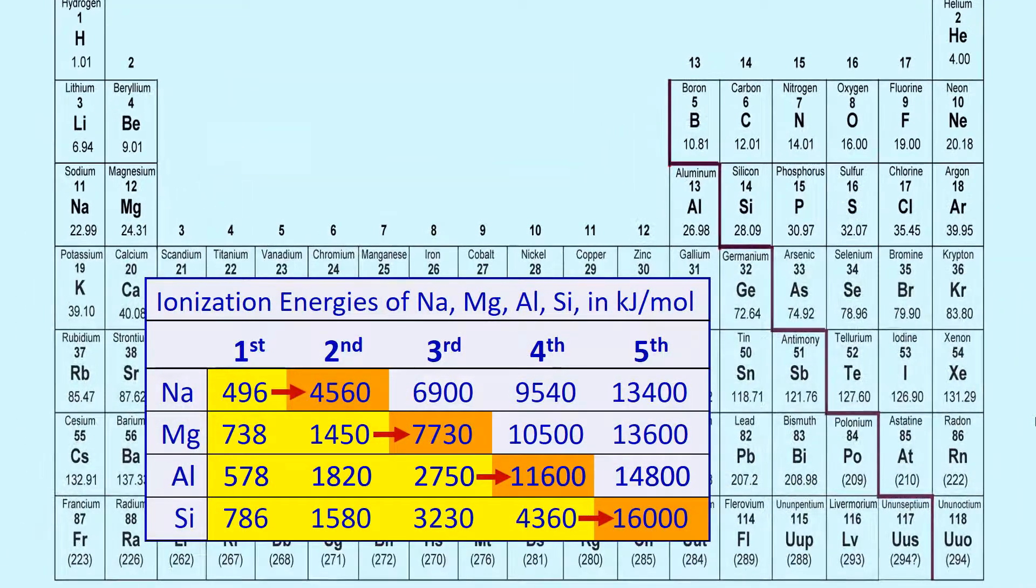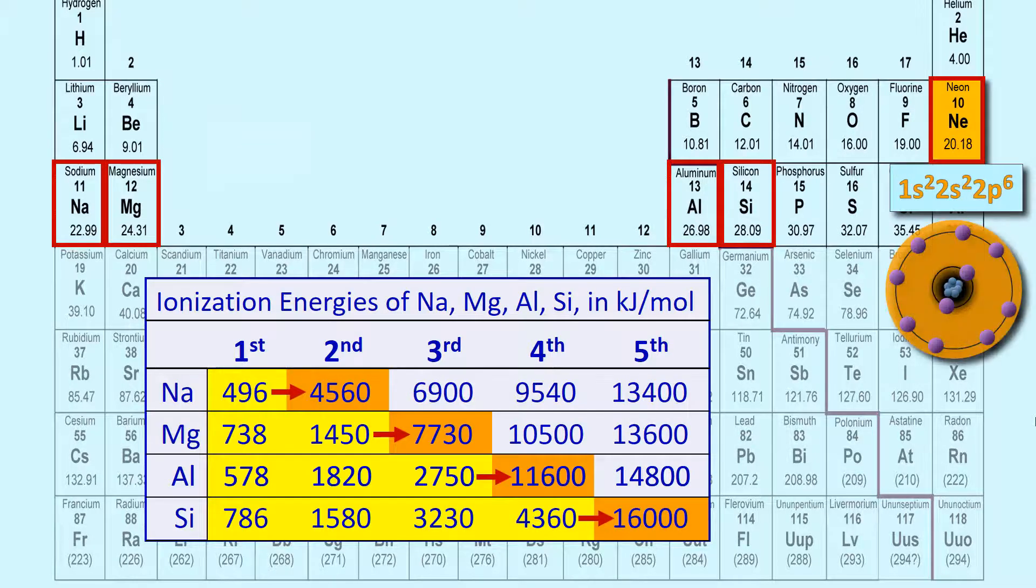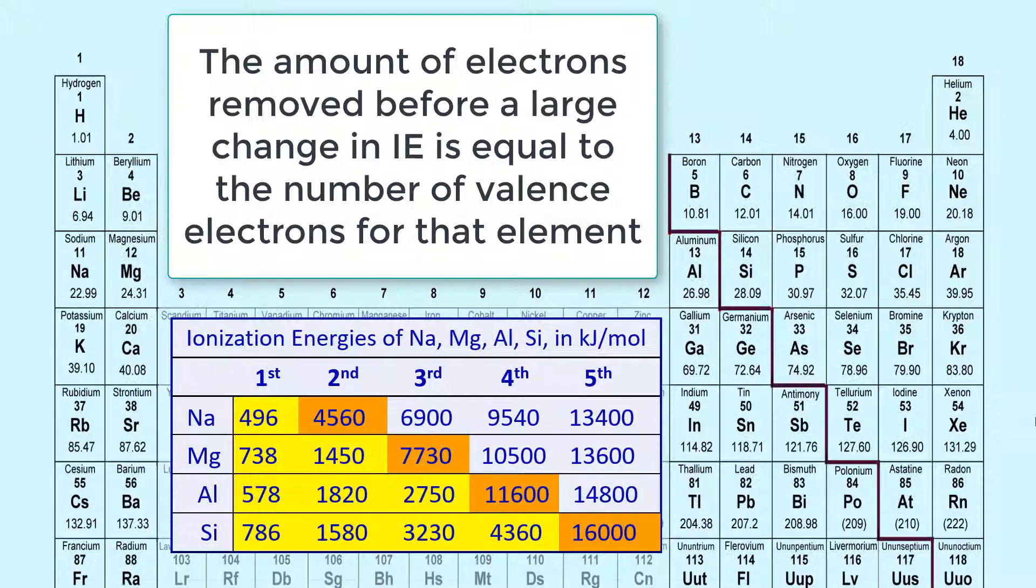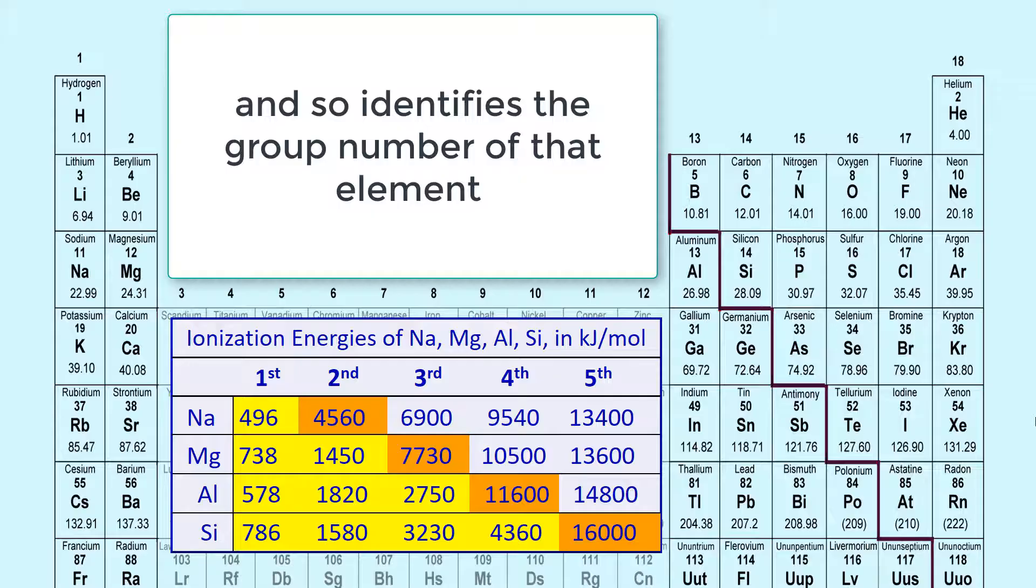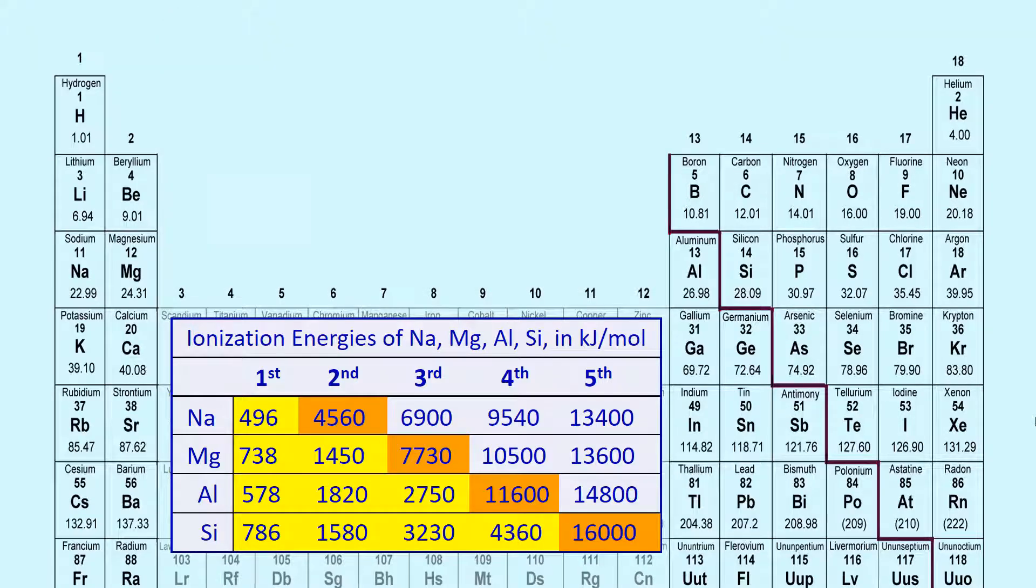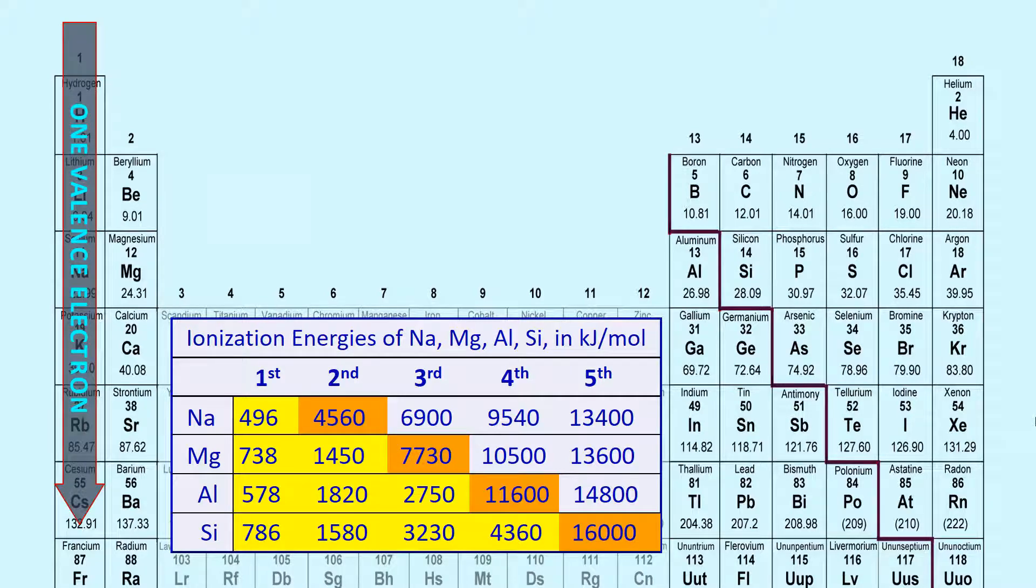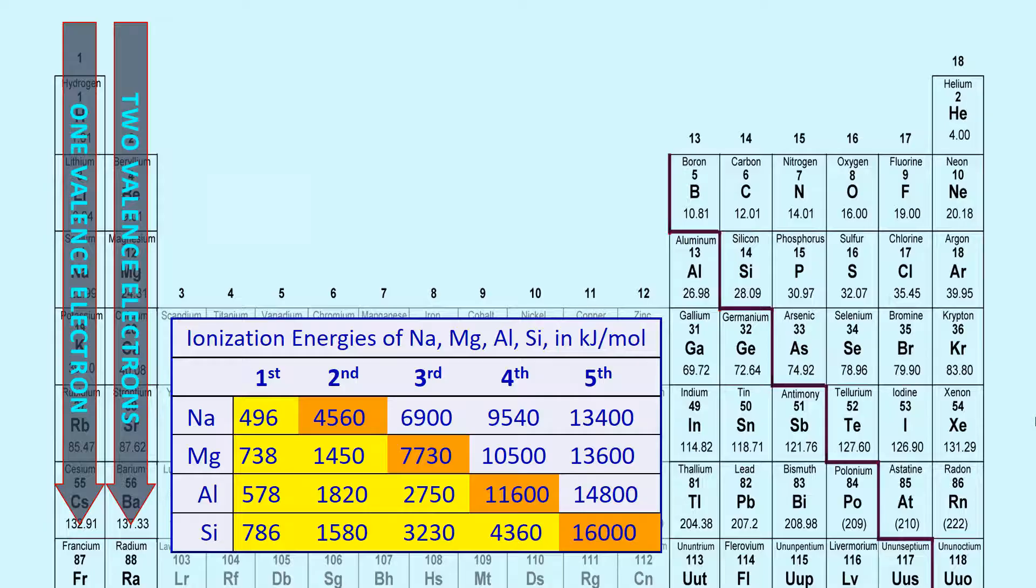What do you think the pattern would be for elements in other periods? Notice that the amount of electrons removed before a large change in ionization energy is simply equal to the number of valence electrons for that element, and so identifies the group of that element. Elements with one electron removed before a large ionization energy change all have one valence electron, and so are in group one. Elements with two electrons removed before a large ionization energy change all have two valence electrons, and so on.